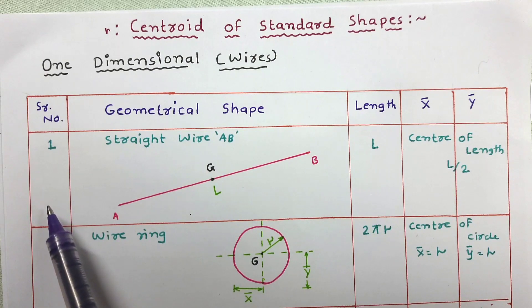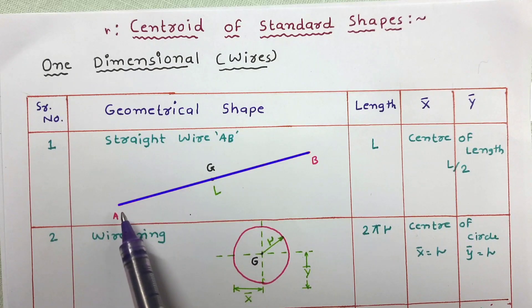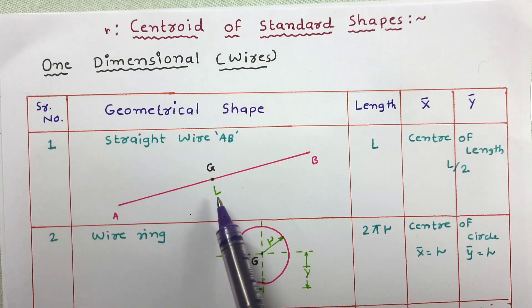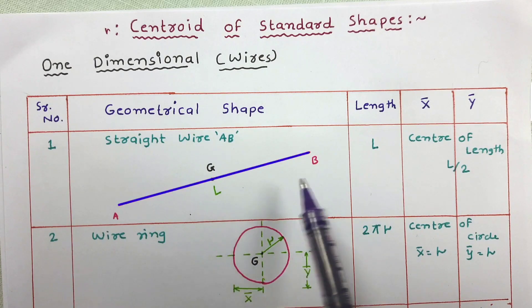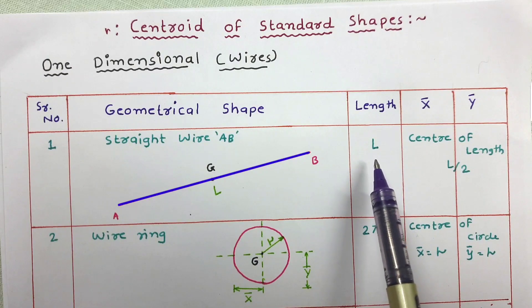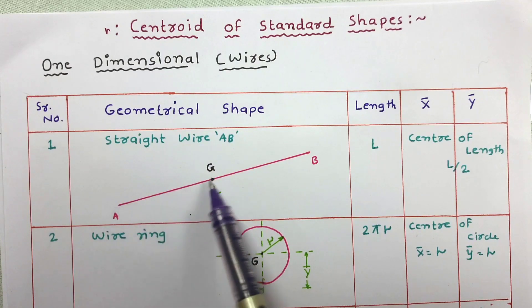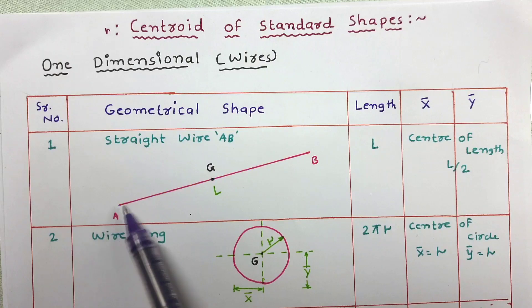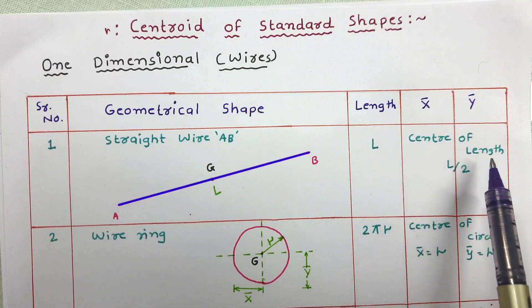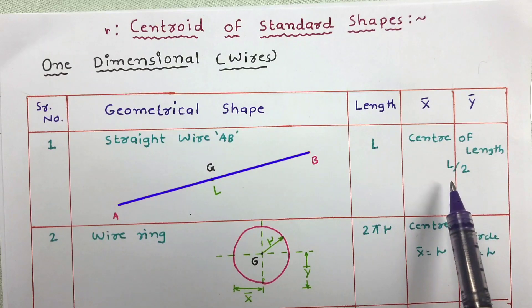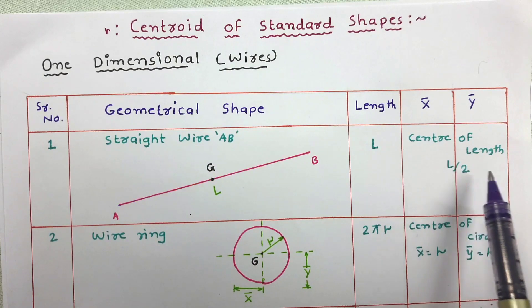Let us start with Straight Wire AB. This is a straight simple wire AB having length L. When such a wire is given with length L, the length is going to be L only. The centroid lies at the center of the wire, so the centroid will be at length L by 2 from any end. X bar and Y bar can be determined by this distance L by 2, that is the center of length.